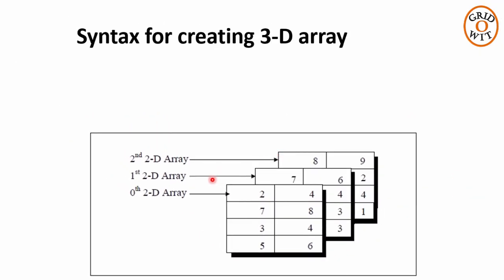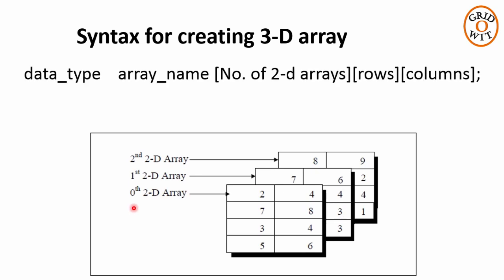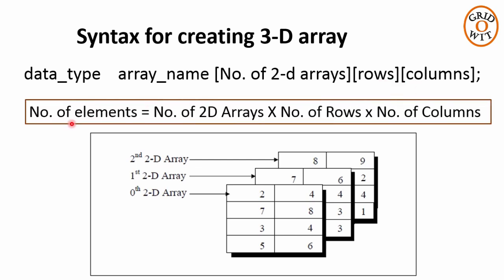So the syntax of creating 3 dimensional array is data type, space, array name, followed by 3 square brackets, having 3 constant values. First value represents the number of 2 dimensional arrays. And the next 2 values represent the rows and the columns of each 2 dimensional array. If you want to find the number of elements in this 3 dimensional array, multiply all the 3 values. That is number of 2D arrays multiplied by number of rows multiplied by number of columns.